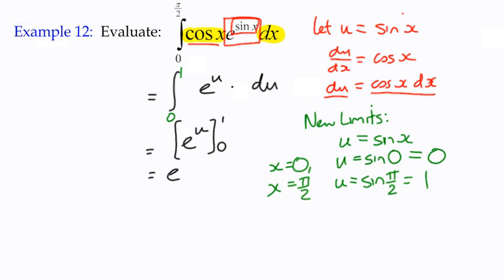Our limits are 0 and 1, which means we can substitute in 1 first of all, and then substitute in 0. And we end up with e to the power of 1 is e, e to the power of 0 is 1.